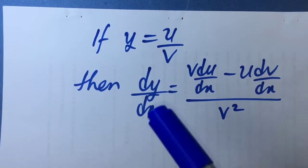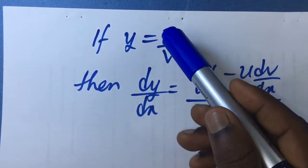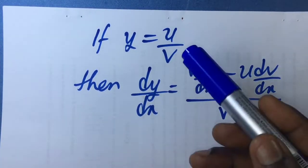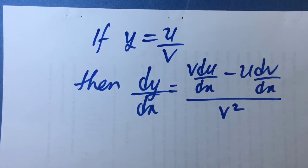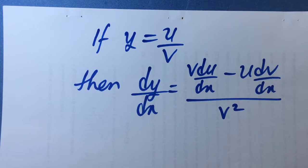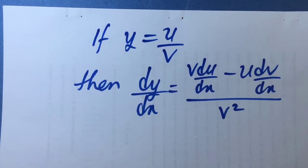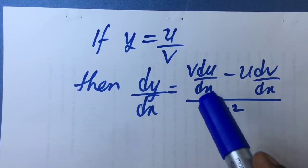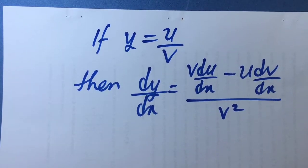We shall be considering a case where y, a function, is expressed as a quotient of two independent functions, u and v, where y, u and v are all dependent on the same independent variable. We want to show that if y is expressed as u over v, then dy/dx, the derivative of y with respect to x, can be expressed as v·du/dx minus u·dv/dx, all over v squared.